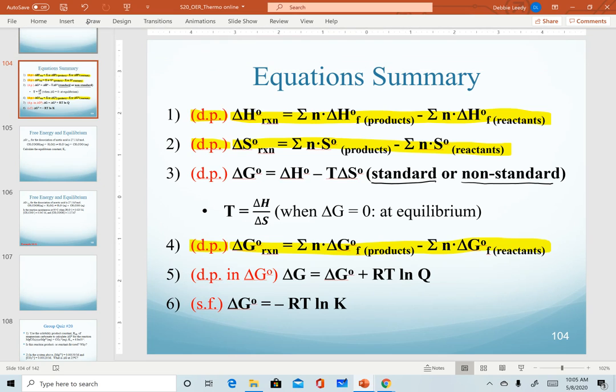From equation three, we did derive the equation to solve for temperature. This can be used to solve for the temperature of a phase change or to determine the temperature at which a reaction will change spontaneity. For temperature, we will use sig figs because we are dividing, but for simplicity in number three, because our last step is subtraction, we're going to go by decimal places of our original enthalpy and entropy values.